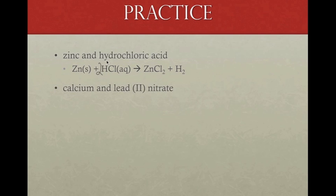Our next example we have is calcium and lead two nitrate. So first of all, let's write this out. We have calcium, which is Ca, and then we have lead two nitrate. So we have Pb for lead, and we know that it's lead two, so it's a plus two oxidation number. And then nitrate is a polyatomic. It's NO3, and it has a negative one charge.